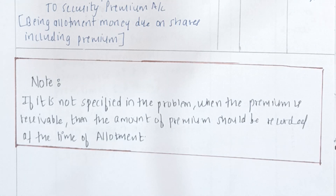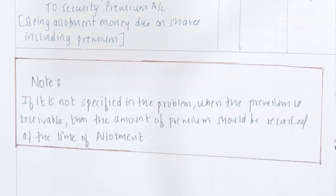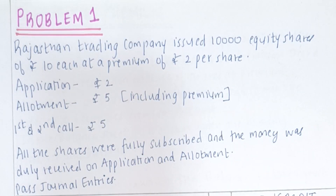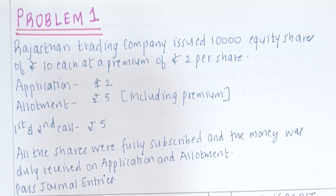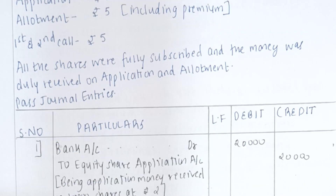Let's solve a problem on securities premium. Rajasthan Trading Company issued 10,000 equity shares of Rs. 10 each at a premium of Rs. 2 per share. On application Rs. 2, on allotment Rs. 5 including premium, and the first and second call Rs. 5. All shares were fully subscribed and the money was duly received on application and allotment. Pass the general entries.